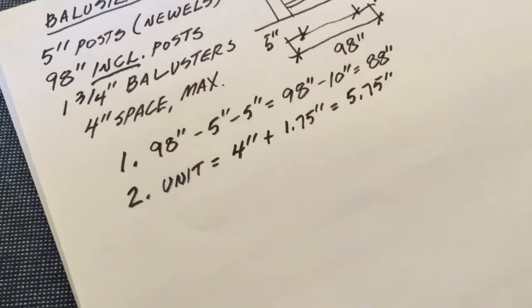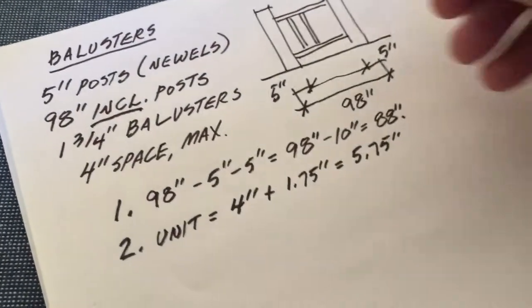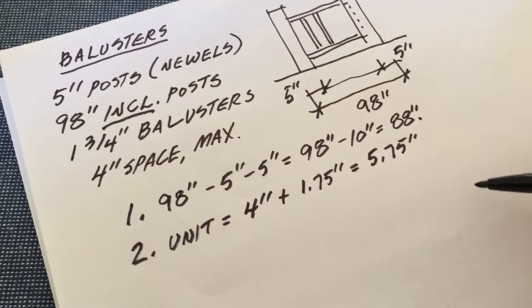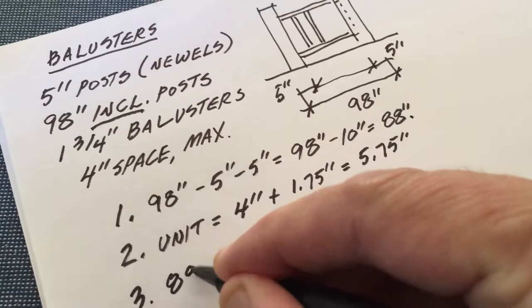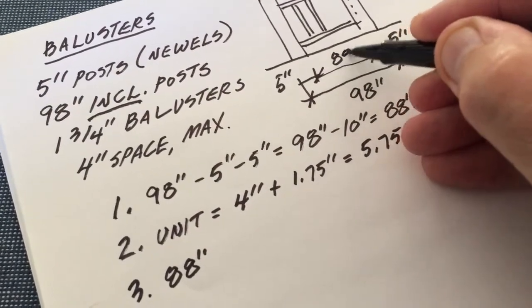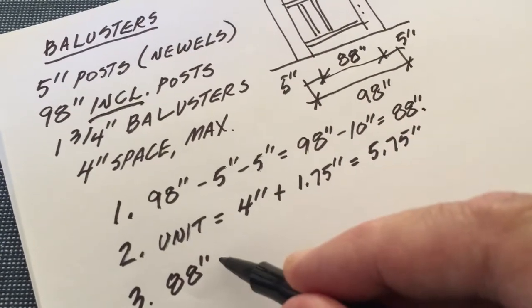Now I'm going to adjust this dimension by adding that ghost baluster at the end to make my math work out so I have whole units. I take my space between overall of 88 inches that I found and I divide that.